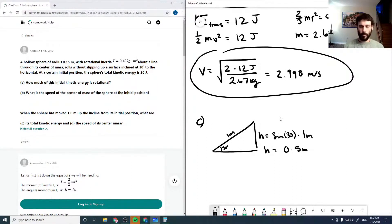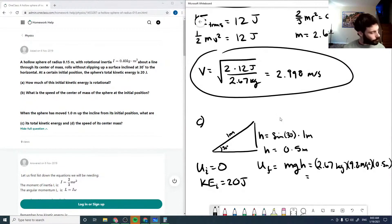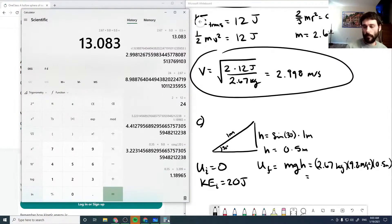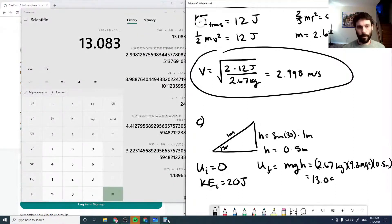And so then if we've moved one meter up the incline, we started with a potential energy of zero. Our kinetic energy was 20 joules. And now we've moved to a Uf of mgh, which is equal to 2.67 kilograms times 9.8 meters per second squared times our 0.5 meters, which is equal to 13.083 joules.